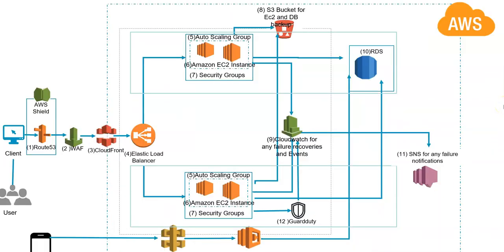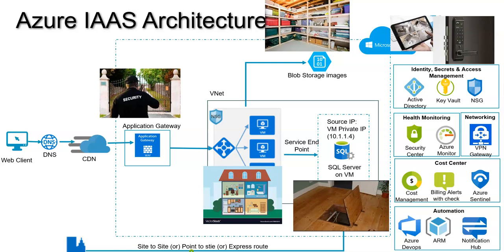Similarly, on AWS you have EC2 groups, Elastic Load Balancer, CloudFront, and Web Application Firewall. You have S3 instead of blob storage in AWS. The components are the same but the resource naming from each vendor is different. The main intention of this video is to understand the architecture.